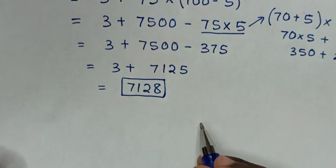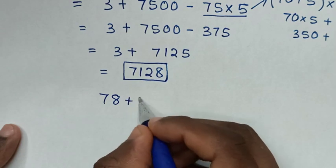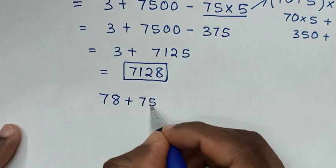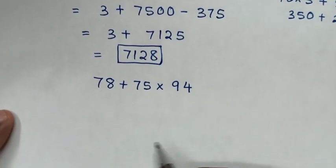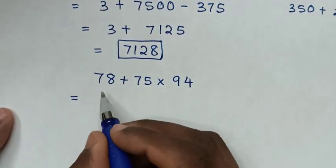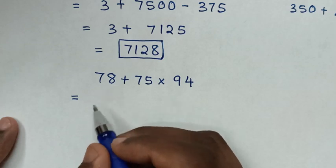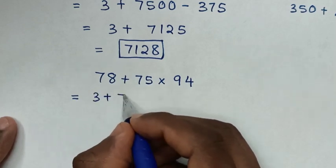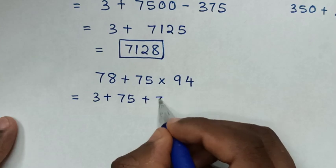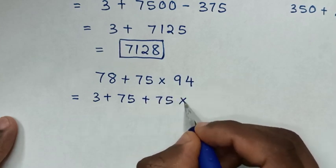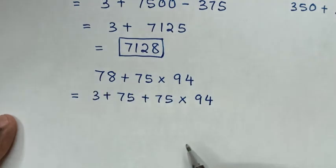Or, to solve by another method: from 78 plus 75 times 94. It will be equal to — for this 78, take 75 as common. 78 is the same as 3 plus 75, then plus this 75, then times 94.